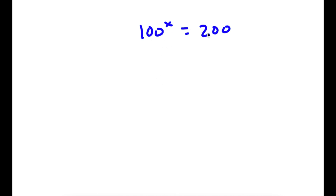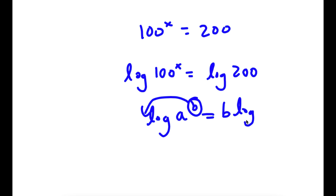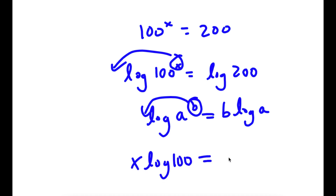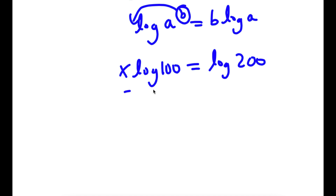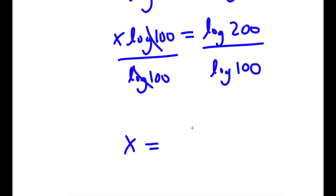So in this problem, I have 100 to the power of x is equal to 200. To solve this, I'm going to first take the log on both sides. So now I have log of 100 to the power of x is equal to log 200. If I have something in the form log a to the power of b, I can move x from the exponent to the front, so this equals b times log a. So in this case I have x times log 100 is equal to log 200. Dividing both sides by log 100, these two cancel out, and now I have x is equal to log 200 over log 100.